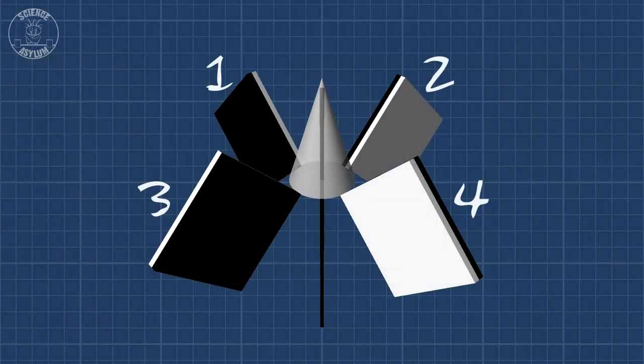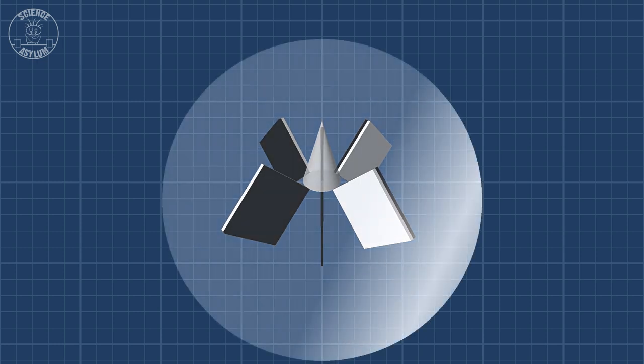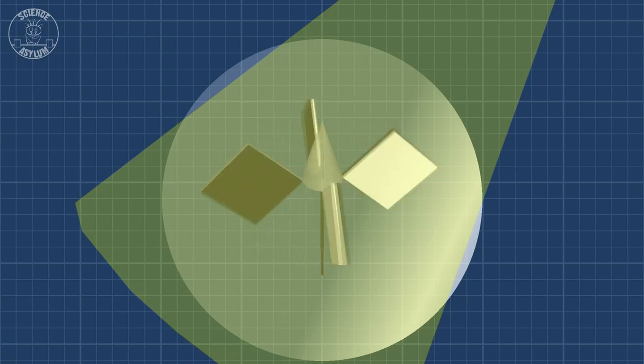Anyway, a Crookes Radiometer looks something like this. There are four veins, each with a white side and a black side. They're enclosed in an airtight glass bulb where most of the air has been sucked out. When you shine light on it, the veins spin.